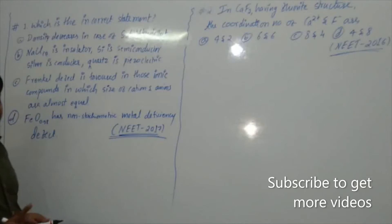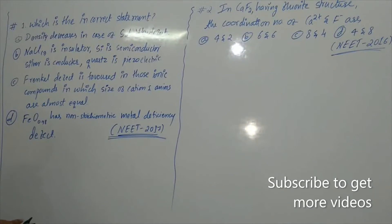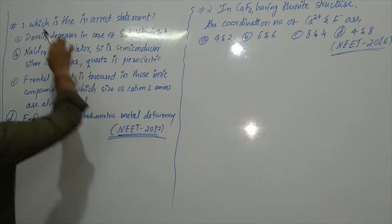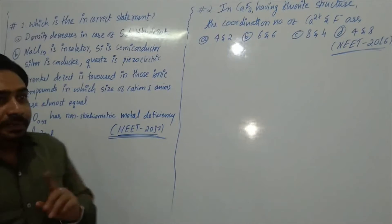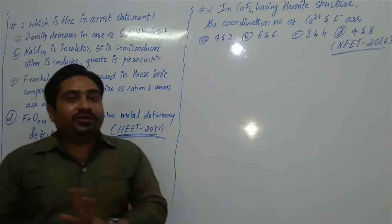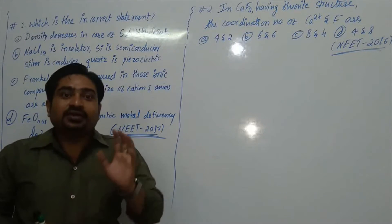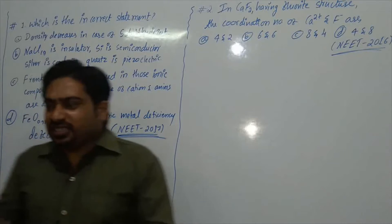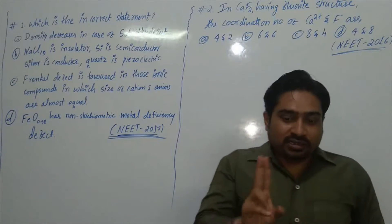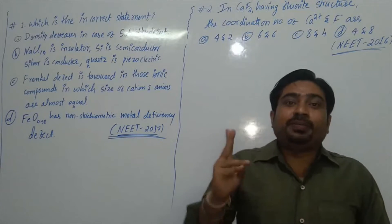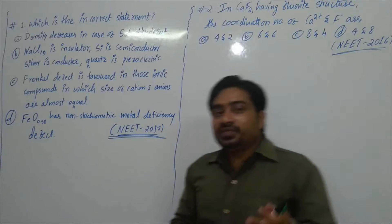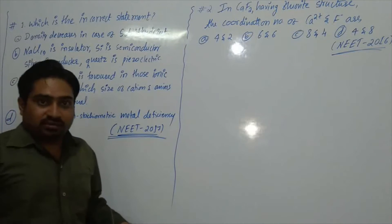This problem was in the NEET 2017 exam. The question asks: which is the incorrect statement? They have given four statements and we have to find the incorrect one. The best method to solve NEET or competitive examinations is the elimination method — by directly eliminating one or two options, the remaining options have a 50-50 chance of being correct.